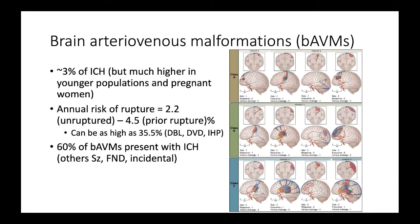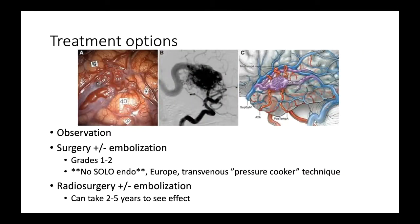Most AVMs do present with hemorrhage. An AVM has specific anatomy: feeding arteries, a nidus (the meat of the AVM), and draining veins that are usually arterialized and high-flow. Treatment options include observation — sometimes the risk of treatment outweighs the natural history — surgery with or without preoperative embolization, usually for grades one to two and select grade three AVMs, and endovascular embolization. In the US, endovascular embolization is almost never used as a sole treatment, unlike in Europe where it's more popular.